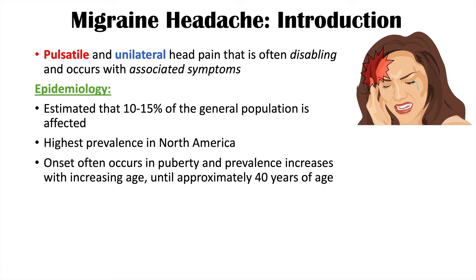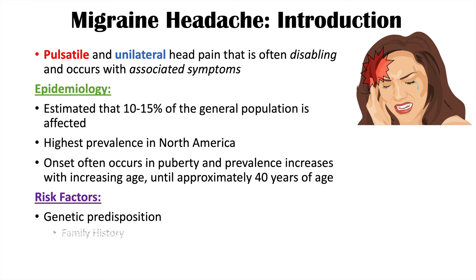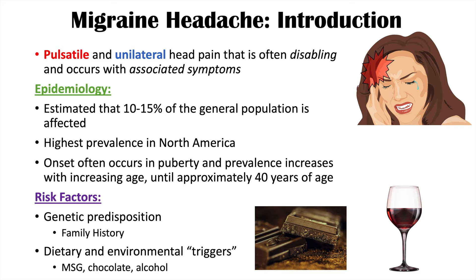Risk factors for migraine headaches include genetic predispositions. If there's a family history, particularly a first-degree family member like a parent or sibling with migraines, you're more likely to have them yourself. There are also dietary and environmental triggers, including MSG, chocolate, alcohol, bright lights, and changes in weather.